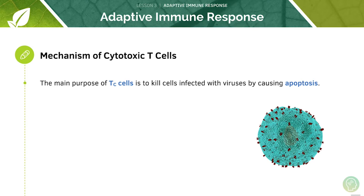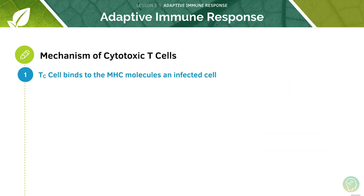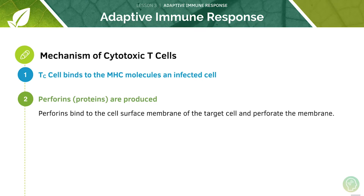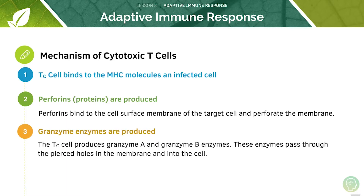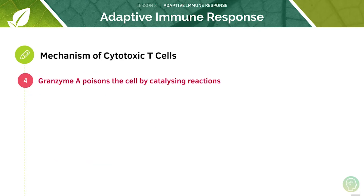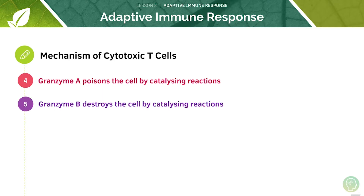Now let's look at the mechanism of cytotoxic T cells. Their main purpose is to kill virus-infected cells by causing apoptosis, or programmed cell death. T cells bind to the MHC molecules of an infected cell. Then perforins — which are proteins — are produced, and these perforate the cell membrane. The cytotoxic T cells also produce enzymes known as granzyme A and granzyme B, which pass through the pierced holes in the membrane and into the cell. Granzyme A catalyses reactions which poison the target cell, while granzyme B catalyses reactions which destroy the target cell.